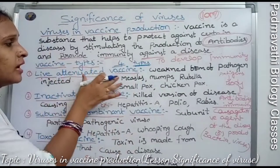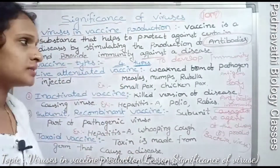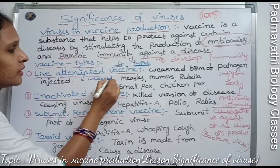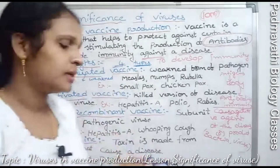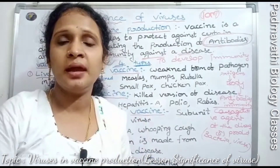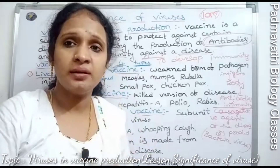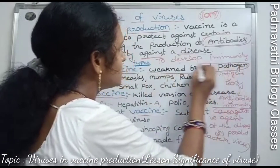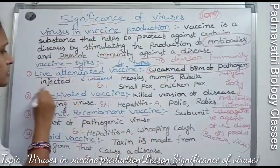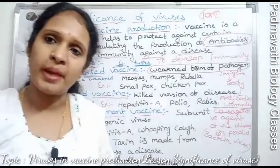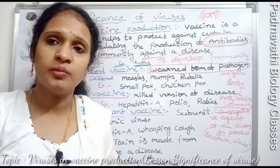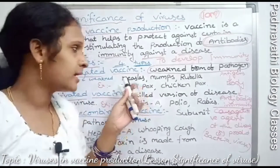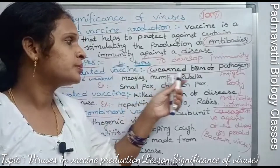The first type is the live attenuated vaccine. Attenuated means weakened. Here, the pathogen is attenuated — that is, a weakened form of the pathogen is injected into our body. This type of vaccine is used to protect against viral diseases like measles, mumps, and rubella.